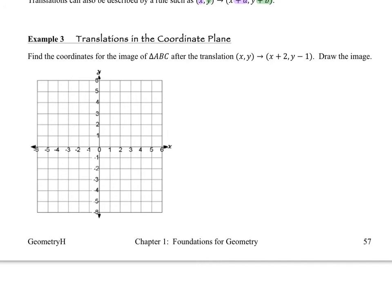So let's take a look at example three, translations in the coordinate plane. What we want to do is find the coordinates for the image of triangle ABC after the translation takes place. First thing that we're going to do is draw in the pre-image, which is missing from your diagram, and I do apologize. So let's draw in the pre-image.